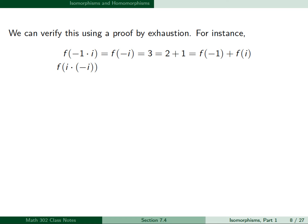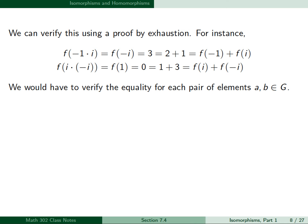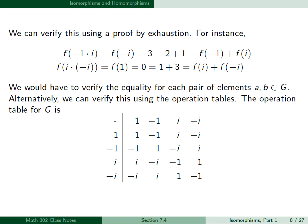We can check two more elements: f(i · (-i)) = f(1) = 0 = 1 + 3 in Z4, which equals f(i) + f(-i). To verify the equality fully using a proof by exhaustion, we'd have to go through every pair of elements a and b in G. Alternatively, we can verify this using the operation tables. The operation table for G is as shown.